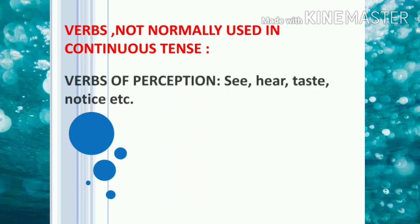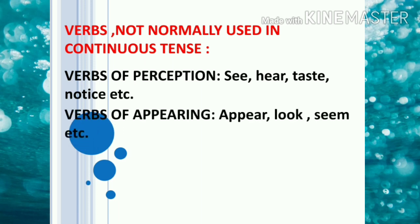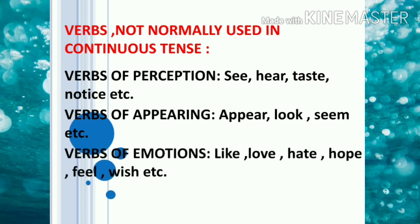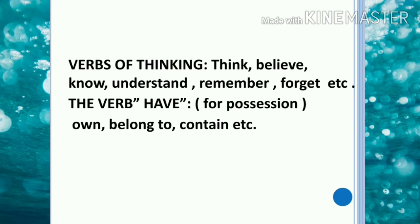These are the verbs which are not normally used in continuous tense. Verbs of perception like see, hear, taste, smell, notice, etc. Then you have verbs of appearing: appear, look, seem, etc. Then you have verbs of emotions like love, hate, hope, feel, wish, etc. Then you have verbs of thinking: think, believe, know, understand, remember, forget, etc. And the last one, the verb 'have' for possession and also verbs like own, belong to, contain, etc.